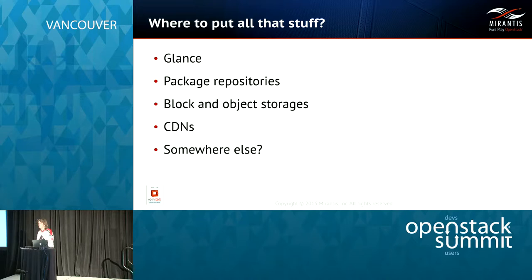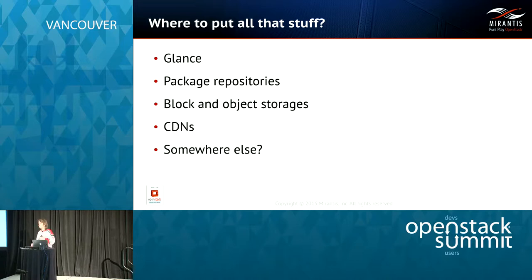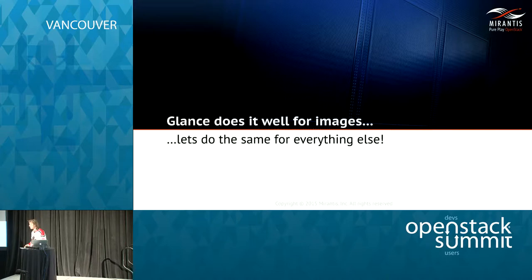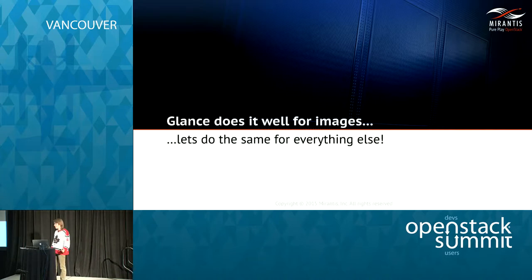We decided to have a native solution that is natural to OpenStack, built and maintained by the OpenStack community, to deliver the assets needed for applications to end users. Glance does very good work delivering images to end users — it has a catalog, tags, various policies, and a metadata registry. So if it already exists for images, let's try to do the same for everything else, in the very same manner and in the very same project.